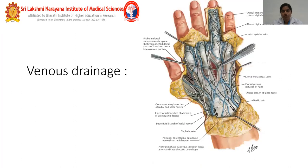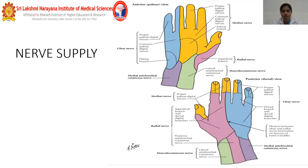Coming to venous drainage, the metacarpal veins drain into the cephalic and basilic veins which extend into the forearm. Nerve supply is provided by the ulnar nerve, median nerve, and radial nerve.